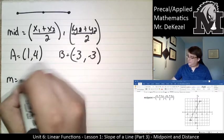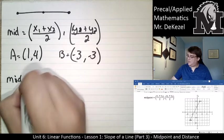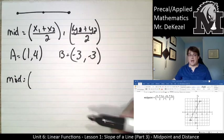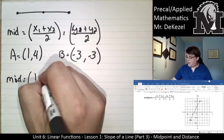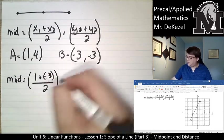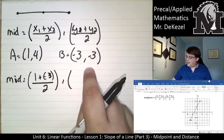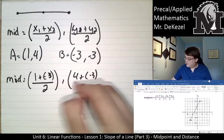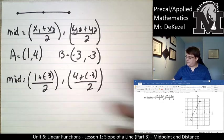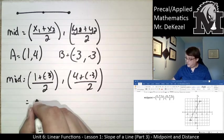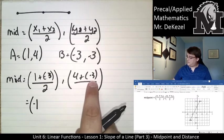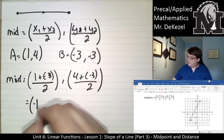So midpoint is equal to the x-values. Now it doesn't matter what the order is because you're adding them up. So 1 plus (-3) divided by 2, and then we have 4 plus (-3) divided by 2. That is -2 divided by 2, which is -1. And then we have 4 minus 3, that's 1 divided by 2, that's a half.